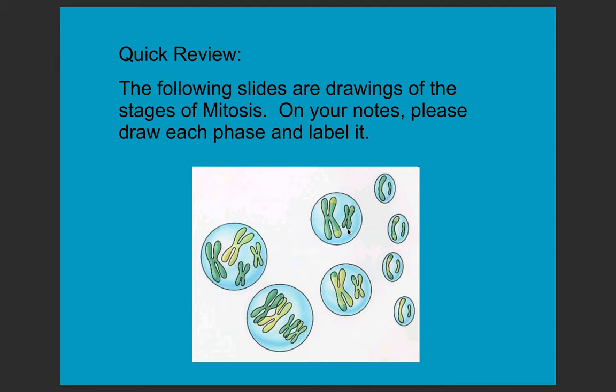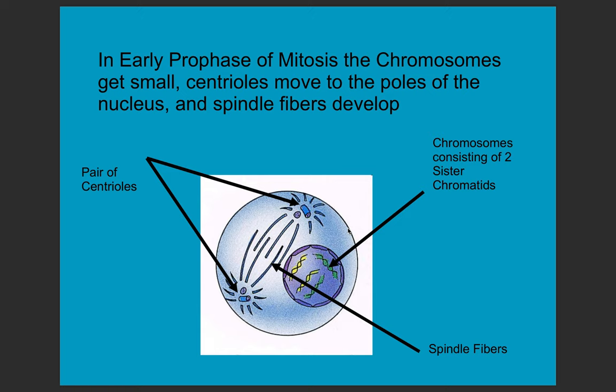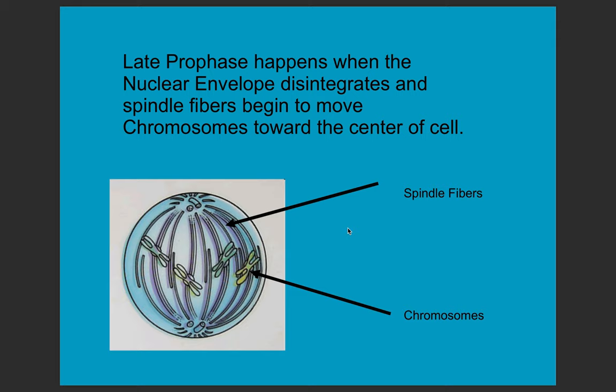Take a little time to write down some notes. Draw each stage of mitosis and interphase. Remember, with interphase we have three stages: G1, S, and G2. Then mitosis has four stages: prophase, metaphase, anaphase, and telophase. And finally, we have cytokinesis.